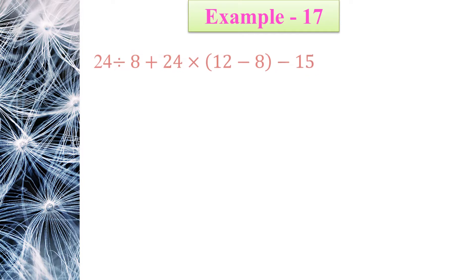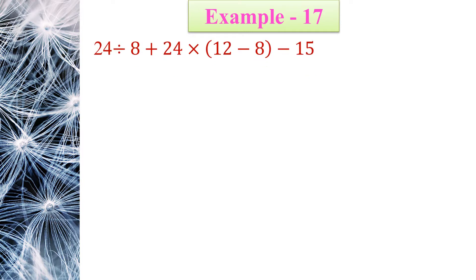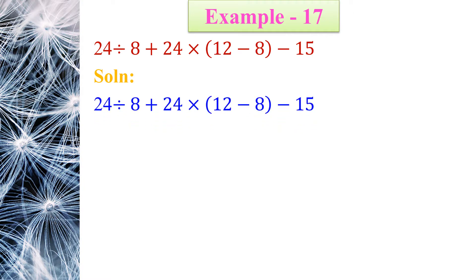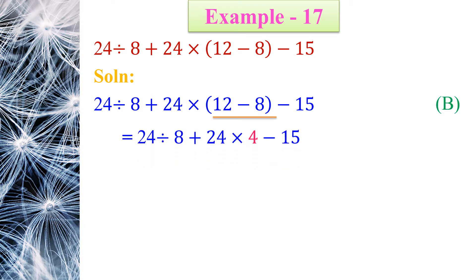Example 17: 24 ÷ 8 + 24 × (12 − 8) − 15. Let us find the solution using BDMAS. First of all, we have to solve inside the bracket. 12 − 8 is inside the bracket, so we solve it first and write the other numbers as they are. So: 24 ÷ 8 + 24 × 4 − 15.